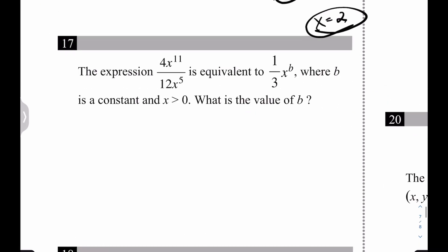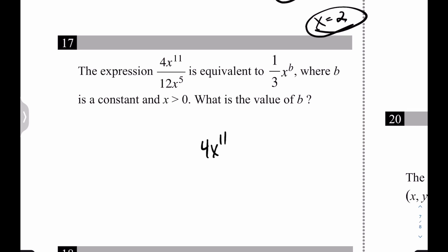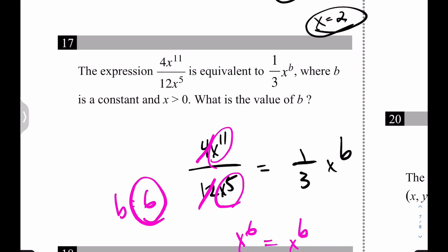Let's keep going down here for 17. So it says that 4x to the 11th over 12x to the 5th is equivalent to 1 third x to the b. Interesting. Well, first of all, the 1 third makes sense because the 4 and 12 does make 1 third. But what do you do through division? You subtract. So really, x to the 6th equals x to the b. b is equal to 6. Done.